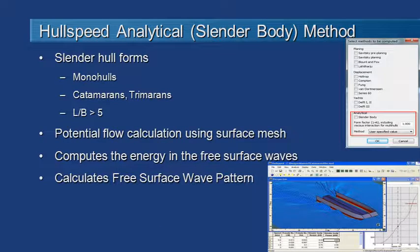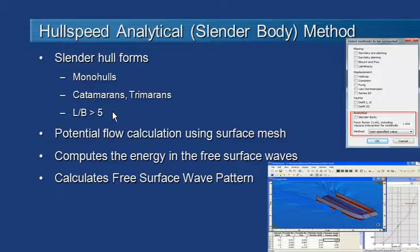The second approach, the analytical or slender body method, is useful for slender hull forms and can be used for either mono-hulls or multi-hulls. However, it does require a fairly large length-to-beam ratio — at least five is a good guide. This requirement is also somewhat speed-dependent: if you want to go to higher speeds you should aim for a higher length-to-beam ratio. The reason is that we are looking at potential flow, so turbulence is not accounted for, making the slender body assumption important.